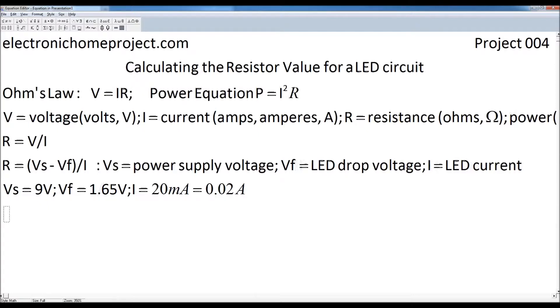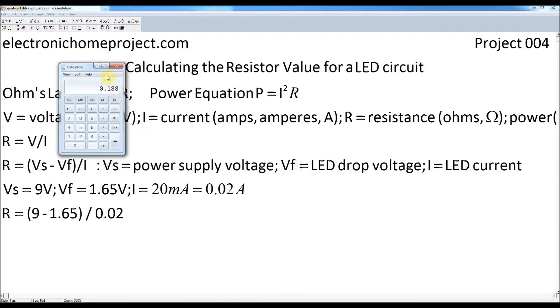So to look at, to calculate the resistance, we need to put those, these values we've got here, into this equation. So R is Vs, which is 9 volts, minus Vf, which is 1.65 volts, divided by 0.02, which is the current. So let's just calculate that.